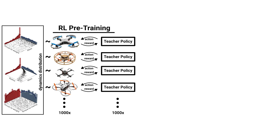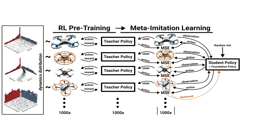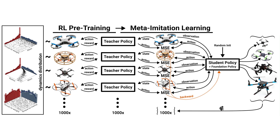Then we train 1,000 expert policies that are each specialized for one of the sampled quadrotors. The behavior of the dedicated expert policy is then distilled into the single foundation policy using meta-imitation learning.